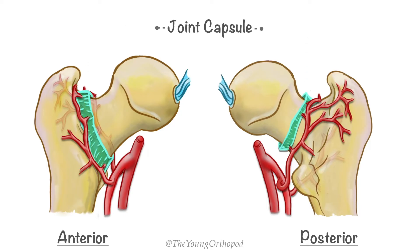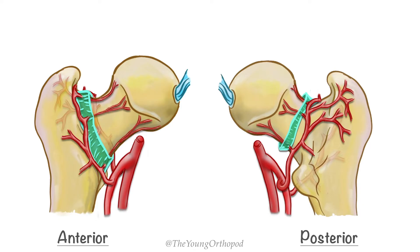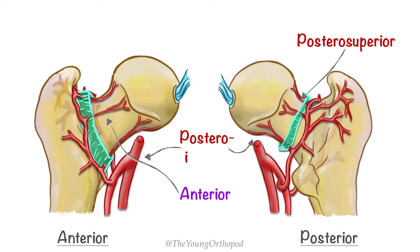The ascending cervical vessels arise from the extracapsular ring and run along the extracapsular femoral neck. These vessels enter the neck at the attachment of the capsule to become the retinacular vessels, which run along the intracapsular femoral neck and comprise three groups: the anterior retinacular vessels, and the posterior superior and posterior inferior retinacular vessels. The lateral femoral circumflex artery gives rise to the anterior vessels, and the medial femoral circumflex artery gives rise to the rest of the cervical vessels.